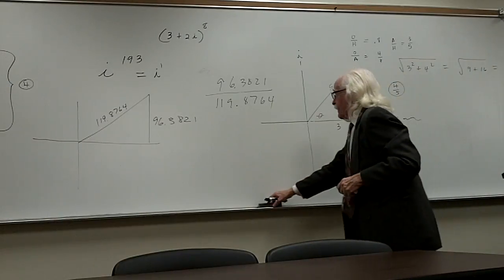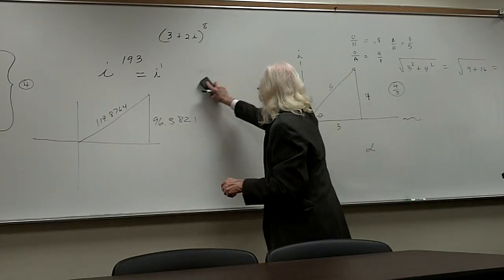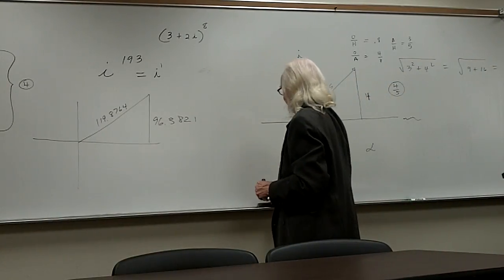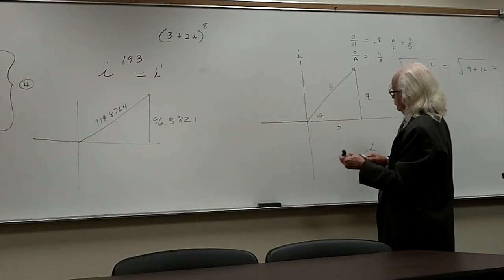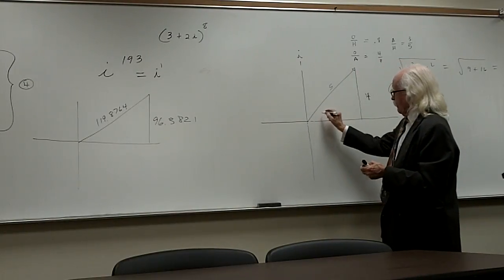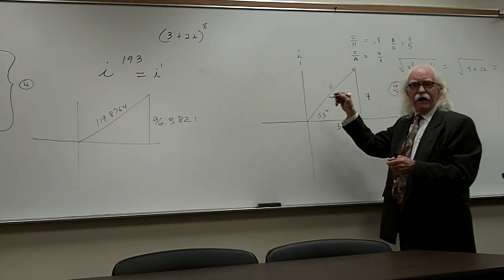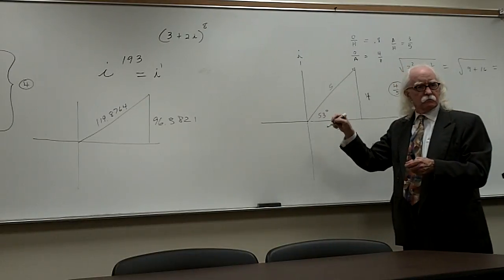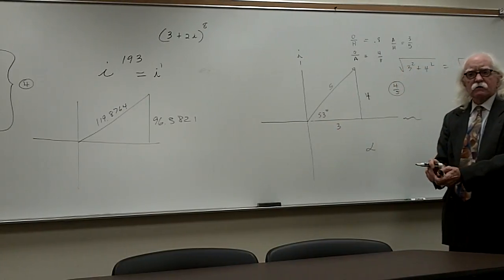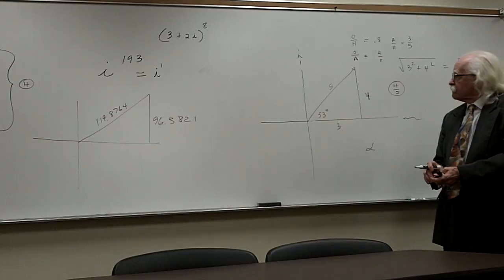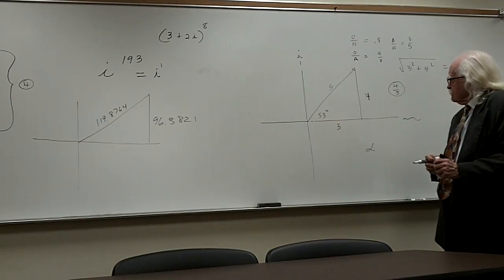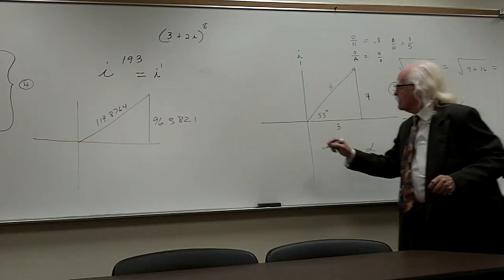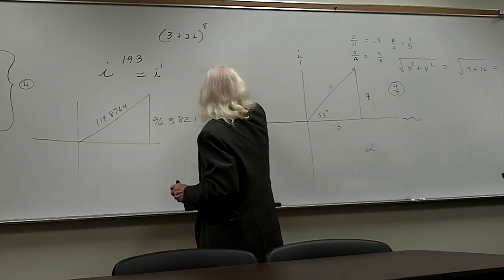When we did this a minute ago, we got the angle to be approximately 53 degrees. If you did this with the 3-4-5 triangle, you can see those sides: 3, 4, and we know this is 5.